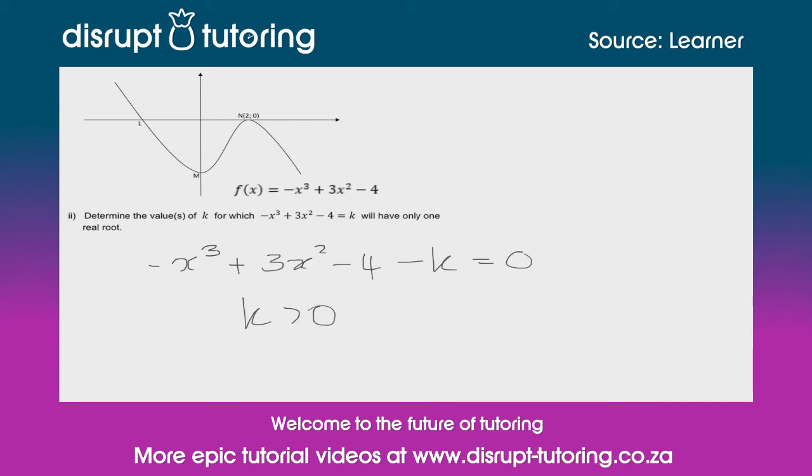If we were to say k is less than zero, let's pretend k is -1. Minus -1 becomes positive one, and therefore we start moving upwards. So that means that the correct answer for this particular question is k must be greater than zero.